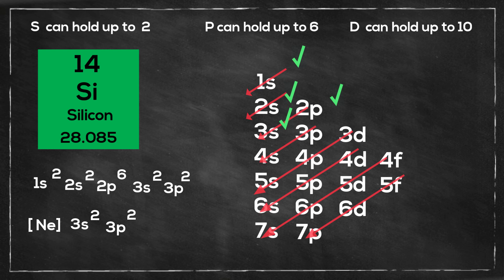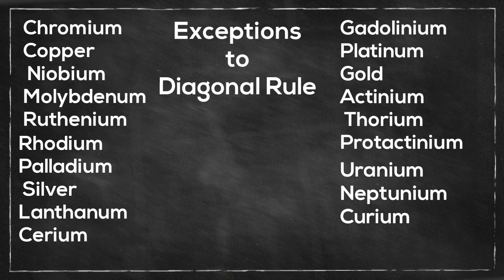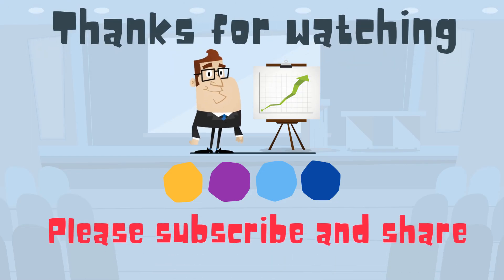Here is the list of exceptions of the diagonal rule, and I hope that helps with the electron configuration. Thanks for watching, and MooMoo Math uploads a new math and science video every day. Please subscribe and share.